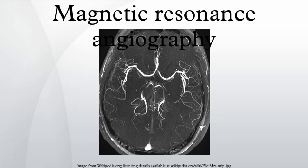There is phase contrast MRA, which utilizes phase differences to distinguish blood from static tissue, and time-of-flight MRA, which exploits the fact that moving spins of the blood experience fewer excitation pulses than static tissue, for example when imaging a thin slice.